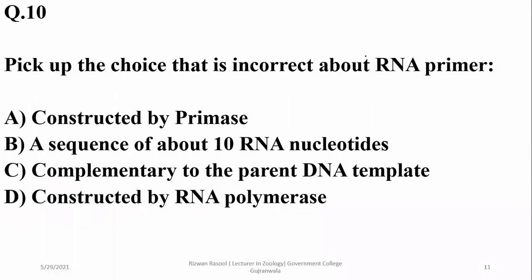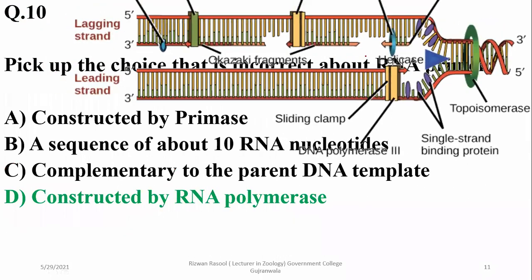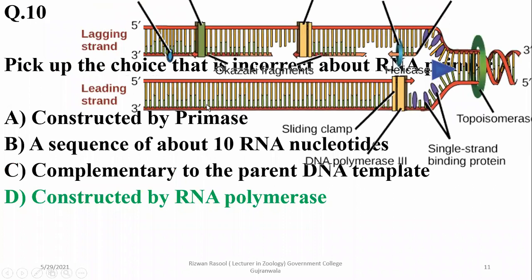Pick up the choice that is incorrect about RNA primer. It is constructed by RNA primase, and it is a sequence of about 10 RNA nucleotides. It is complementary to parent DNA, but it is not constructed by RNA polymerase — so delta is the wrong statement here. RNA primase constructs a primer during DNA replication.